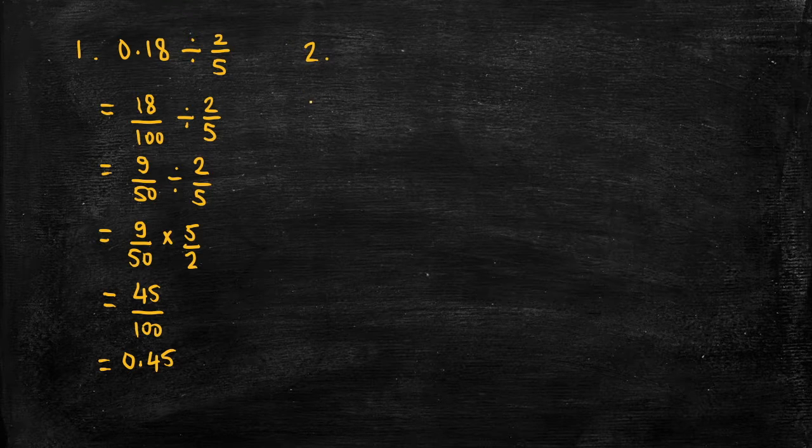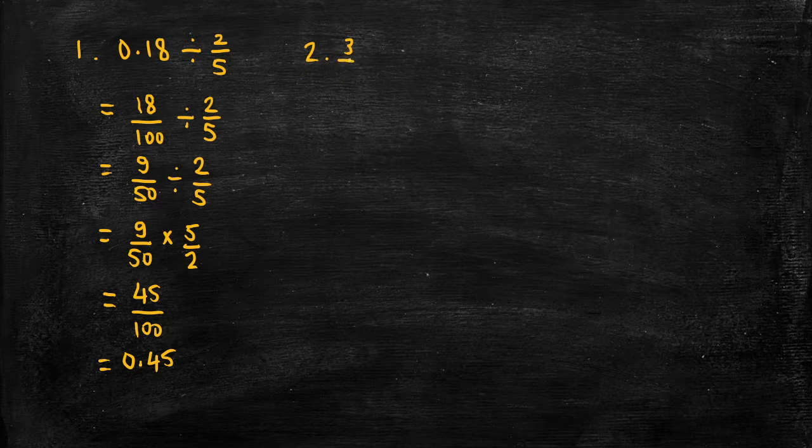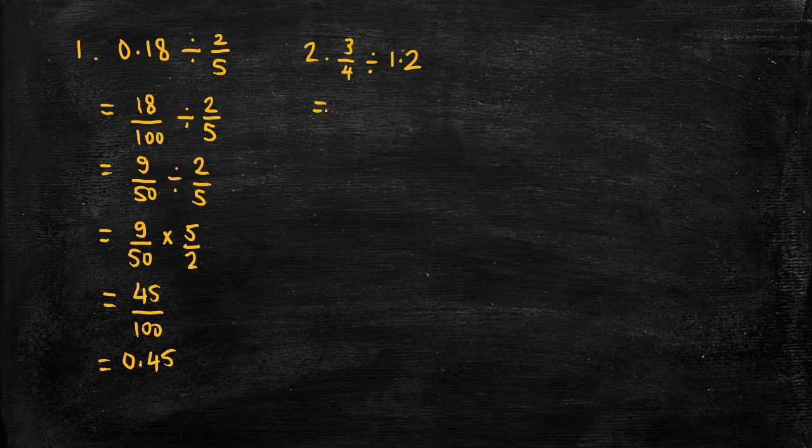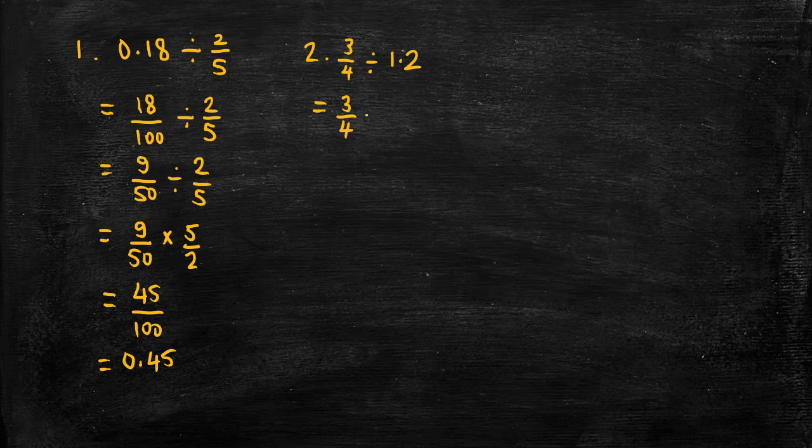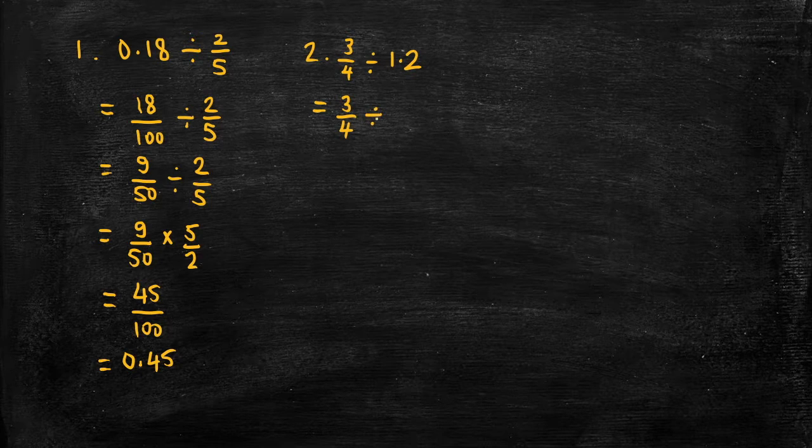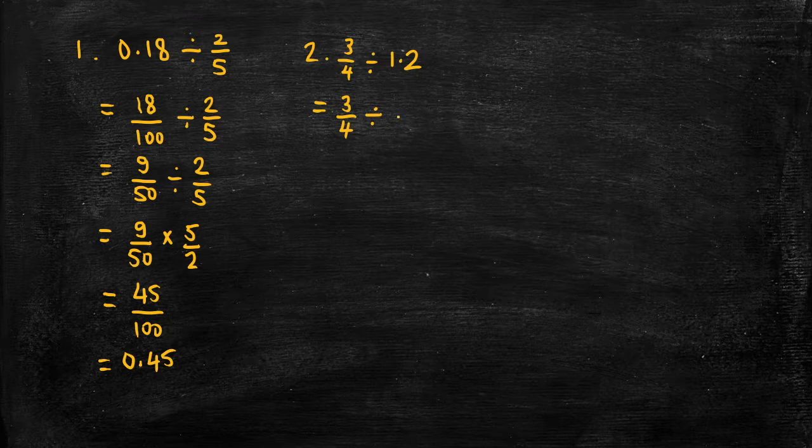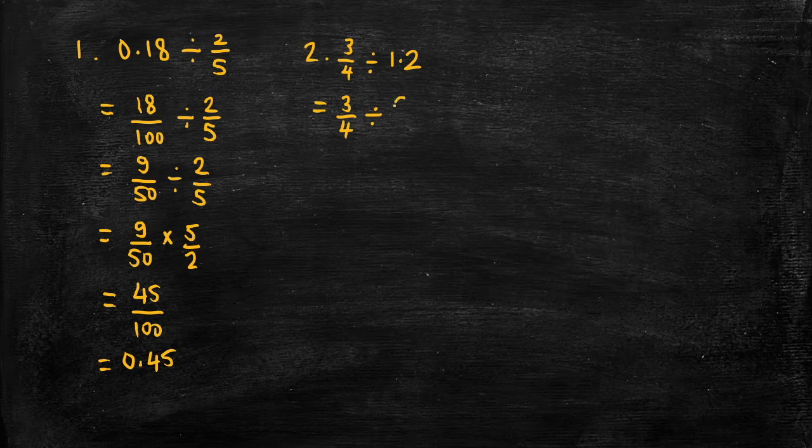Let's do a second example. This time a fraction divided by a decimal. So same strategy as before, express the decimal as a fraction. So 1.2 would be 12 divided by 10 or 6 divided by 5.